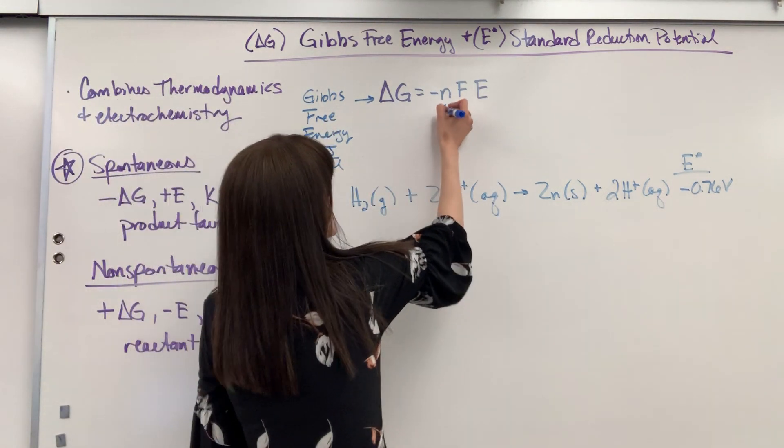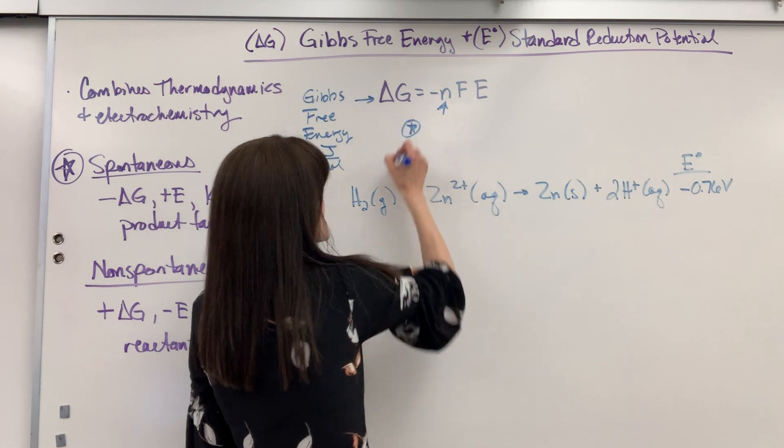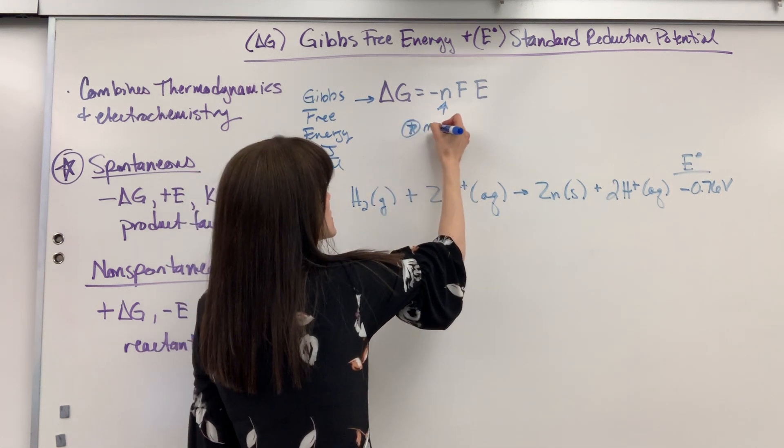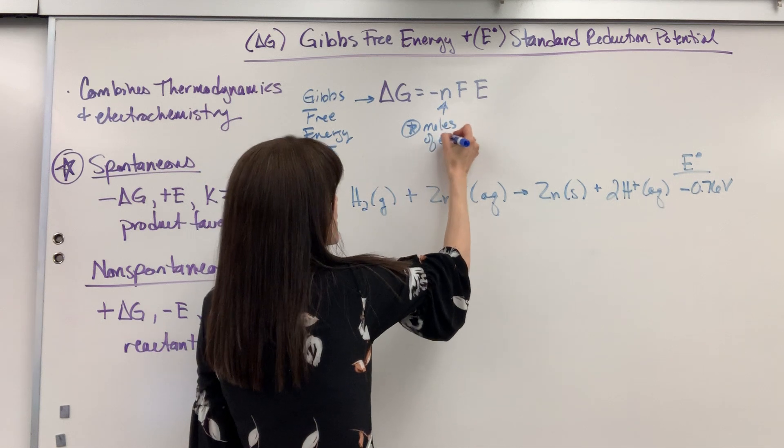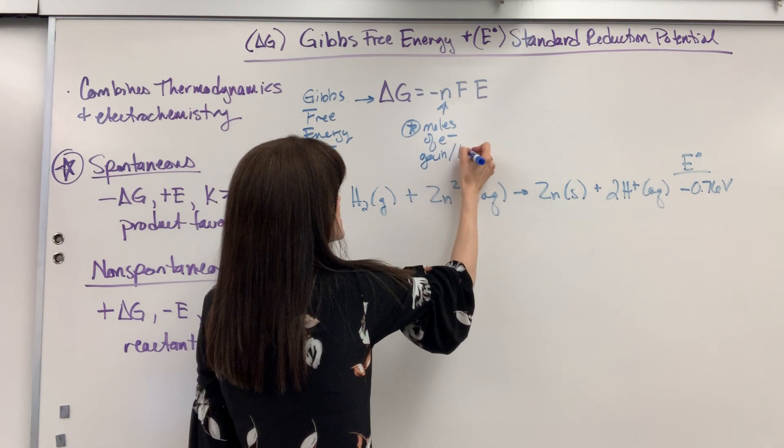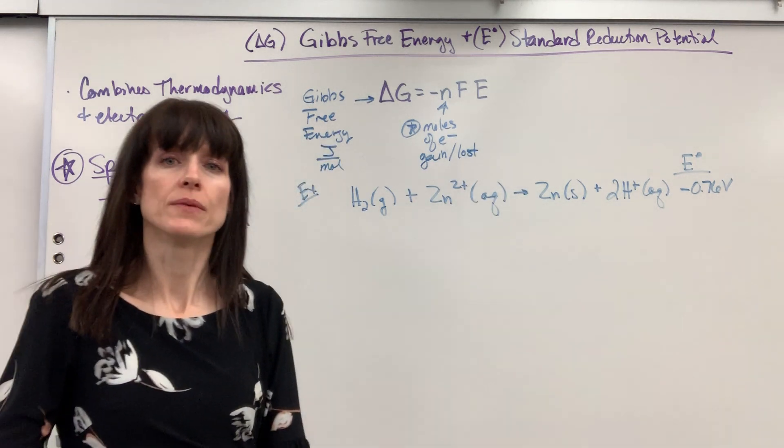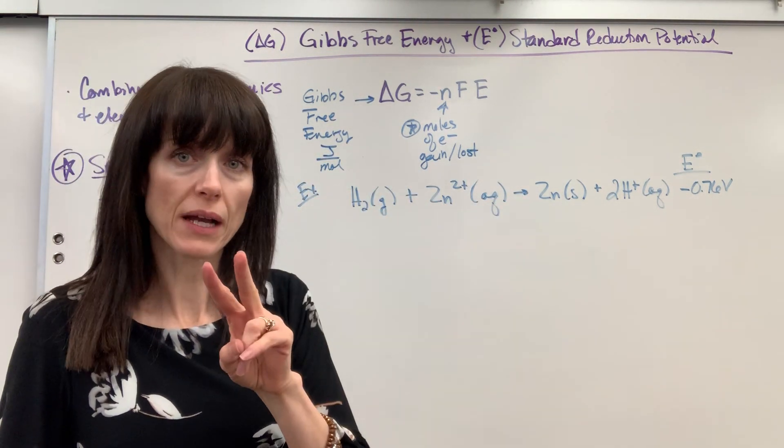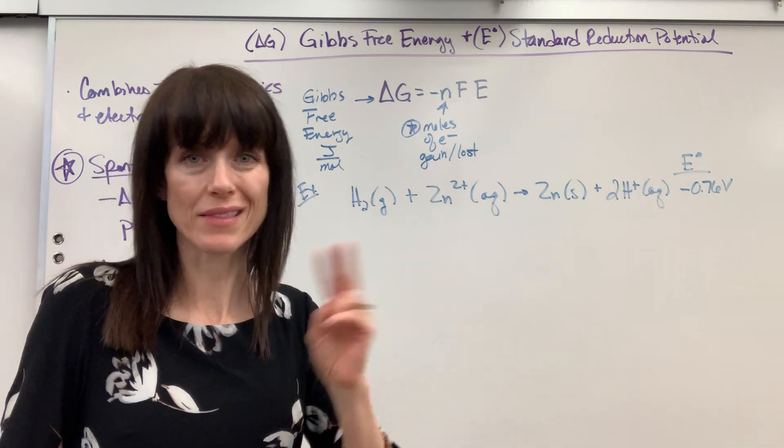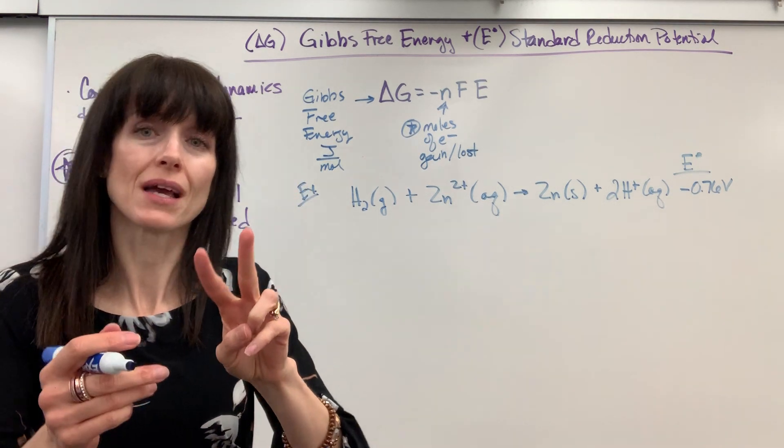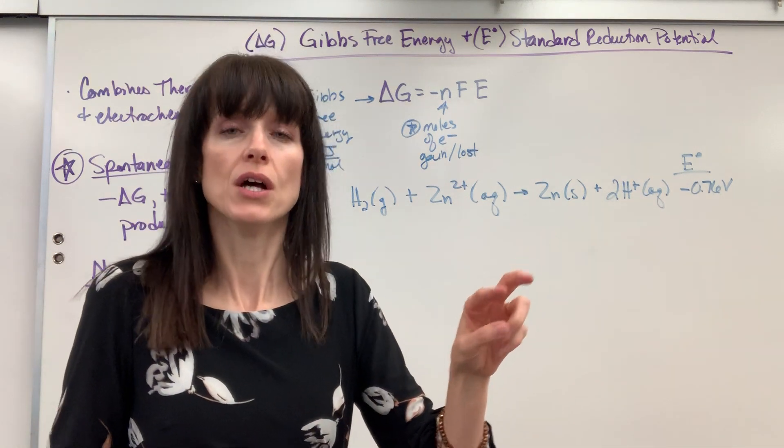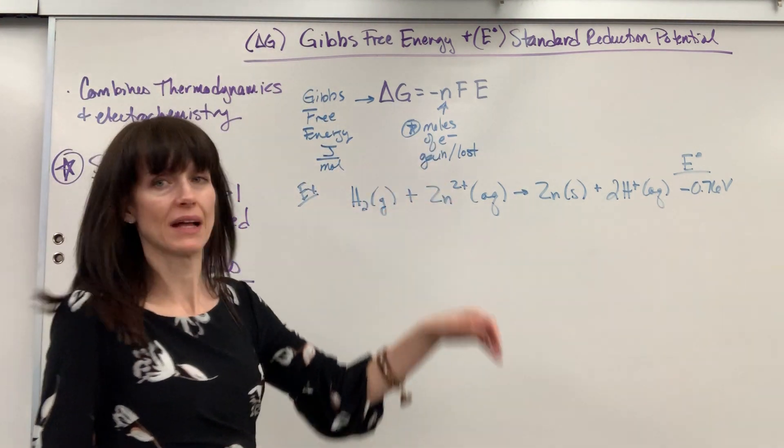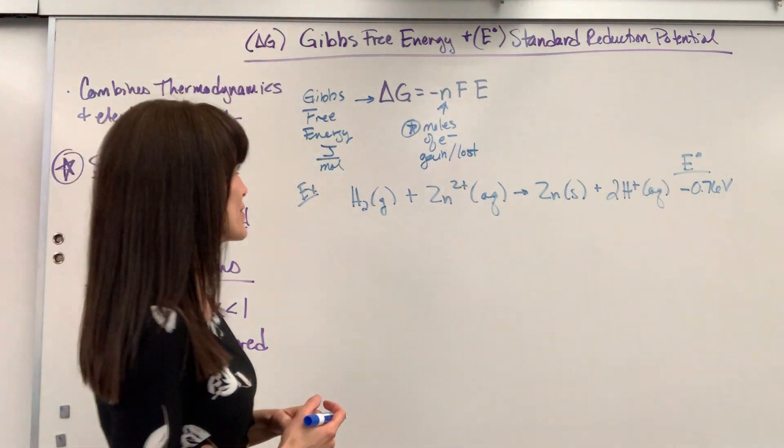N is the moles of electrons gained or lost. In this reaction we lose two electrons we gain two electrons, I don't add that together, it's not four. You lose two electrons and those are the same two electrons that are gained so there's a total transfer of two electrons, two total electrons transferred.